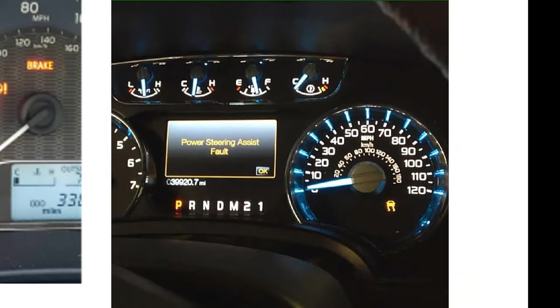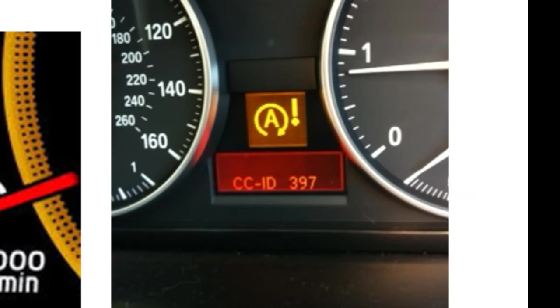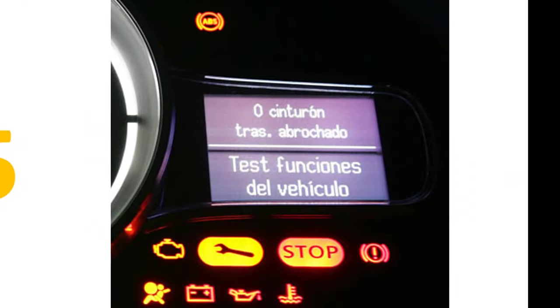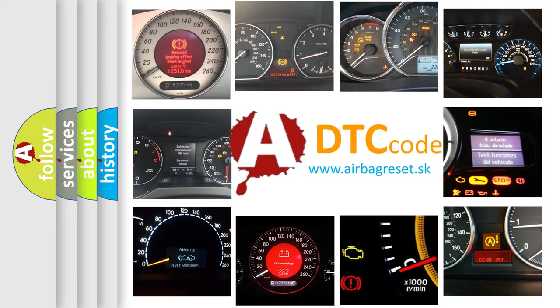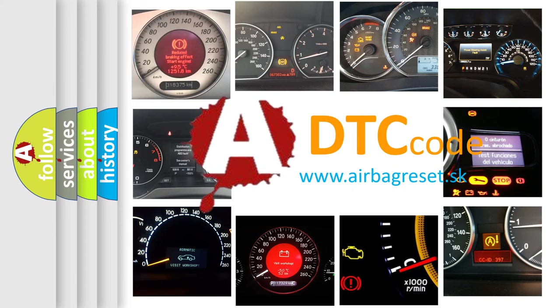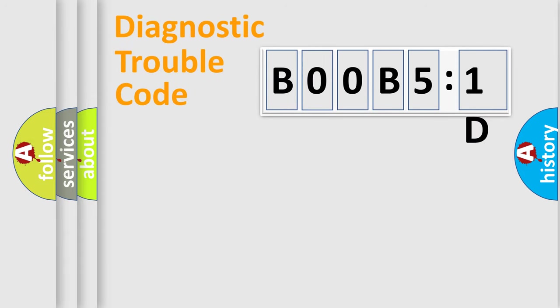Welcome to this video. Are you interested in why your vehicle diagnosis displays B00B5:1D? How is the error code interpreted by the vehicle? What does B00B5:1D mean, or how to correct this fault? Today we will find answers to these questions together. Let's do this.